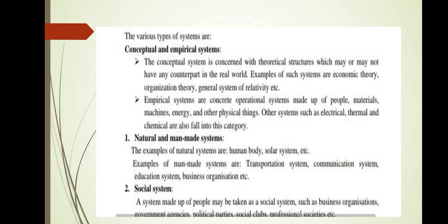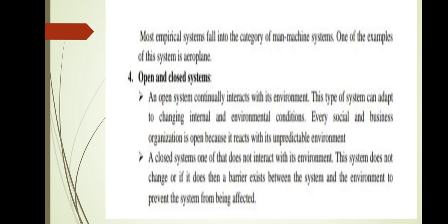A social system is a system made up of people, such as business organizations, political groups, social clubs, and professional societies. Most empirical systems fall into the category of man-machine systems — for example, an aeroplane.